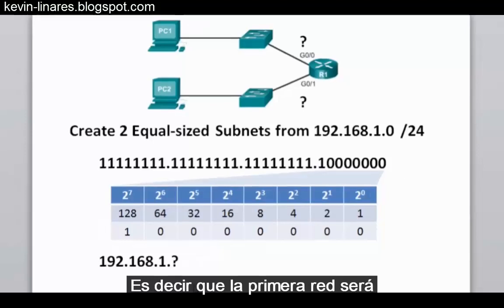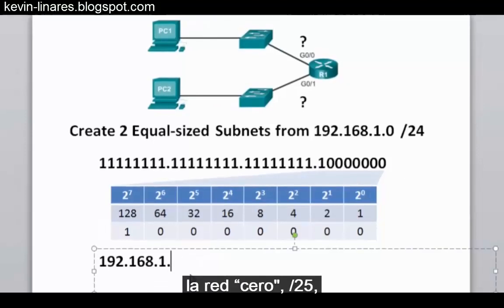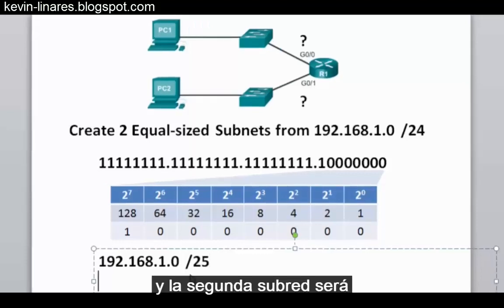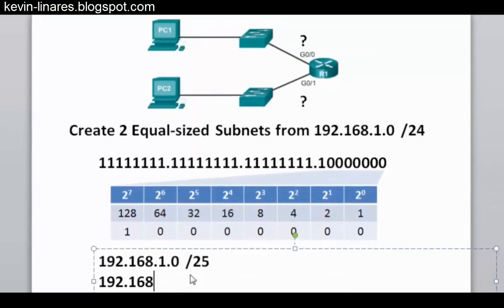In other words, the first network will be the 0 network /25, and the second subnet will be 128 /25.